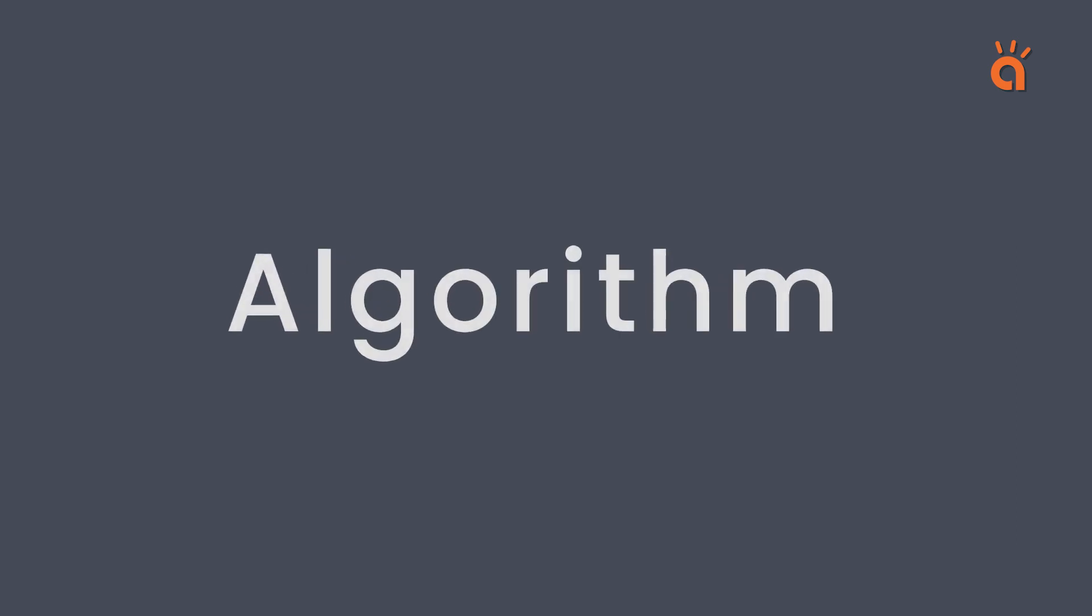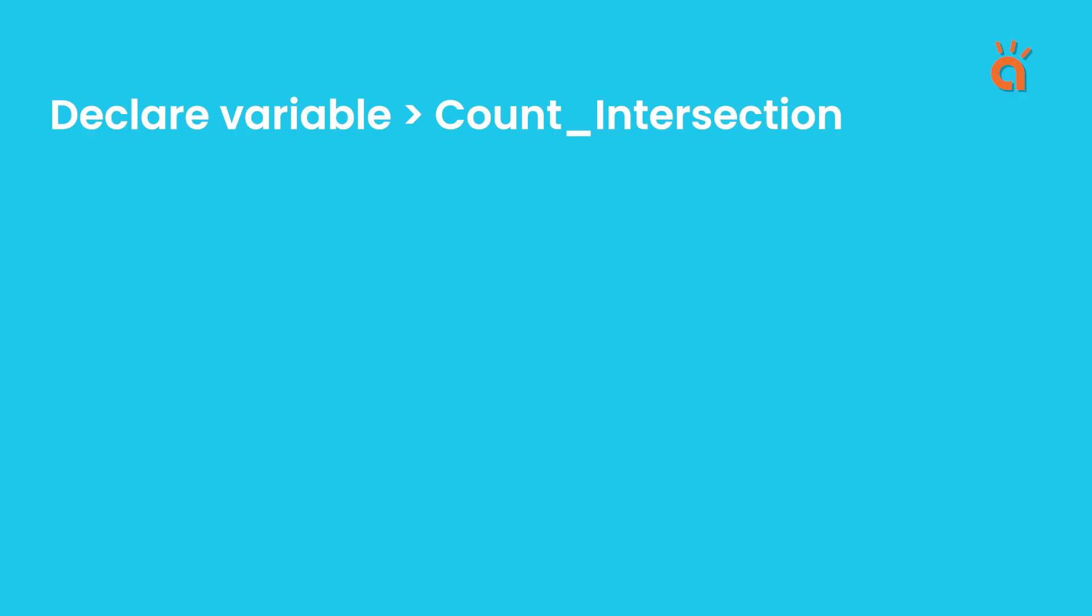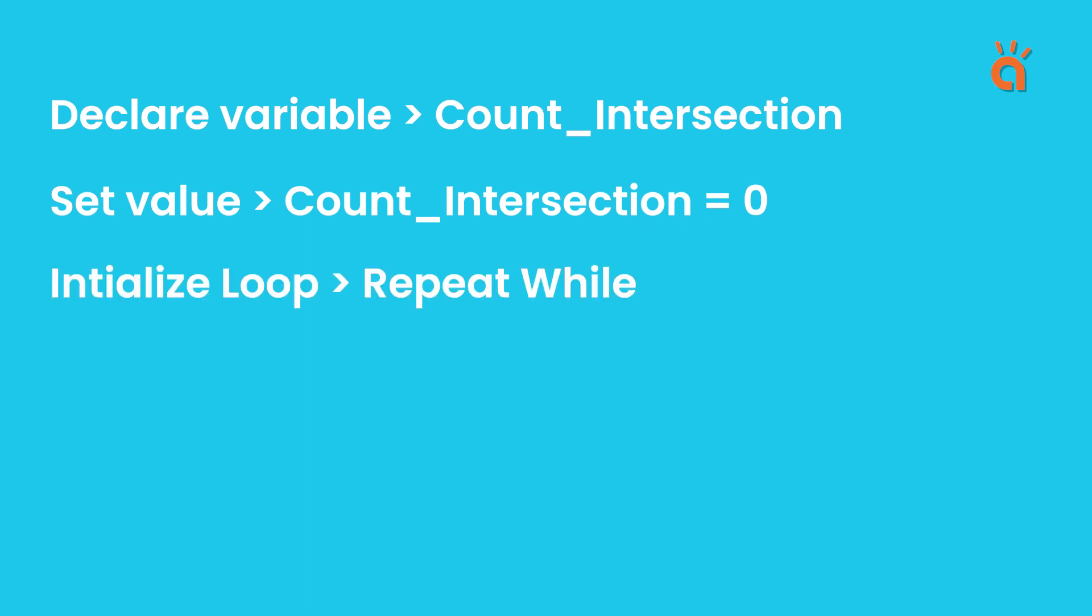Let's now understand the algorithm of the code. We will start with a variable for storing the counts of black intersections. There are total four intersections and we will set this counter to zero initially. Next, we will use a repeat while loop and if conditions to make the robot move in forward direction and take turn when the robot is tilted to left or right. This can be done by reading sensors.